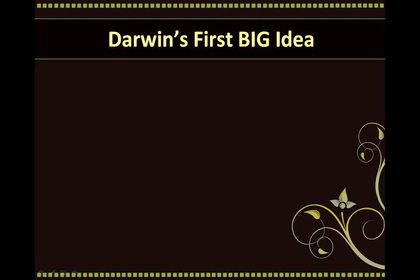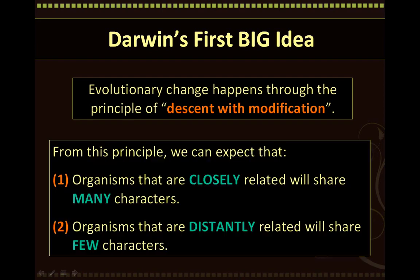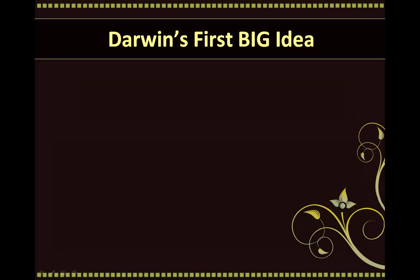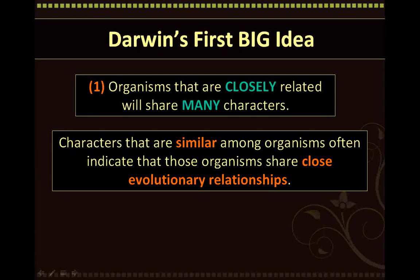Darwin's first big idea was that evolutionary change happens through the principle of descent with modification. From this principle, we can expect that organisms that are closely related will share many characters, and organisms that are distantly related will share few characters. Characters or traits that are similar among organisms often indicate that those organisms share close evolutionary relationships. Closely related organisms share a recent common ancestor, and because this ancestor has been recent, there has been little time for these organisms to accumulate changes that will make them dissimilar. So closely related organisms will often share many characters.